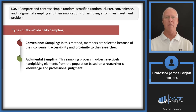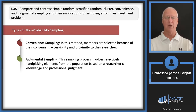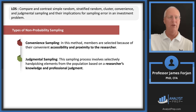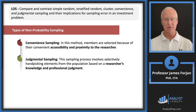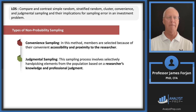Let's get back to non-probability sampling methods. Convenience sampling is based on accessibility and proximity to the researcher — 27 miles away, there's no way I'm going all the way over there. Judgmental sampling is based on the researcher's knowledge and professional judgment. Those are fairly straightforward definitions.